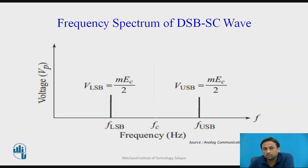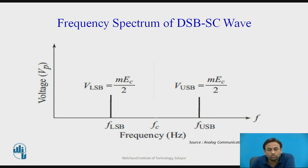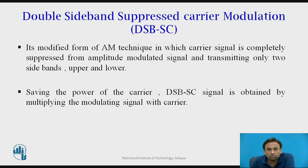In the frequency spectrum of a DSBSC wave, unlike in AM where the carrier frequency component is present, in DSBSC the carrier frequency has been suppressed and only the two sidebands are sent. Both sidebands carry the same information. By suppressing the carrier, up to two-thirds of the power is saved, since the carrier requires the most power in AM, and efficiency increases by up to 50%. The ring modulator and FET modulator circuits will be studied in the next lecture.